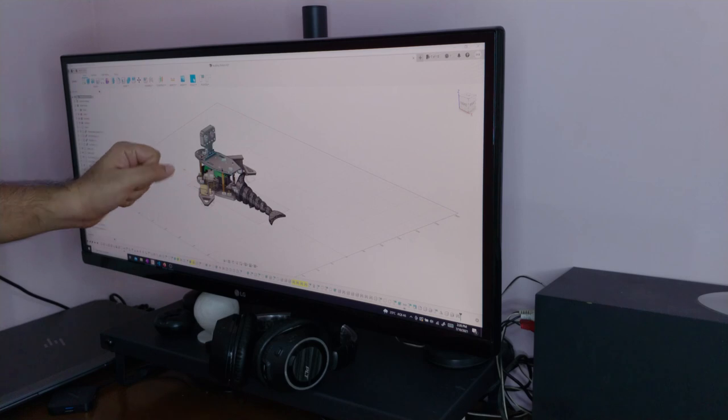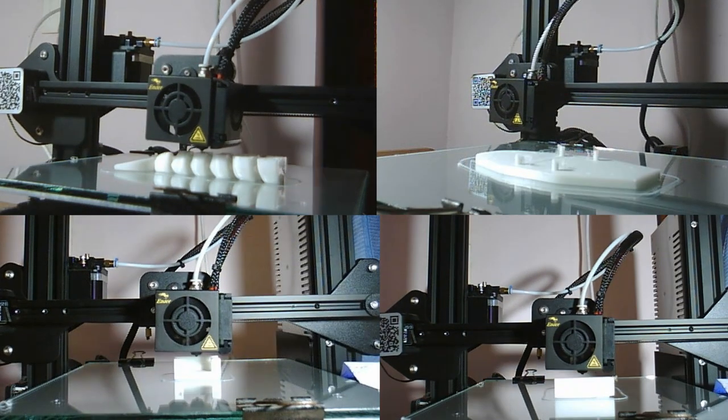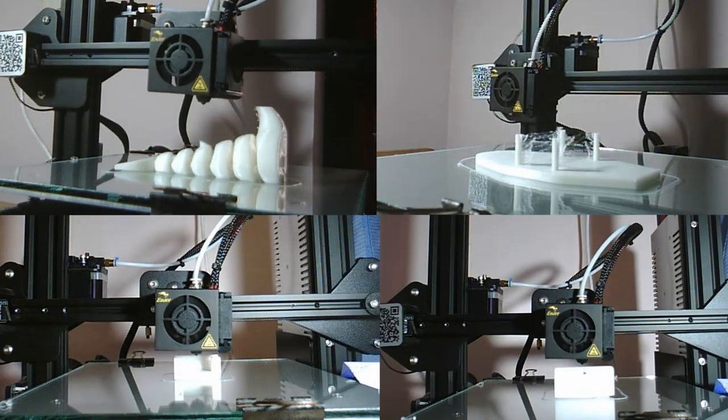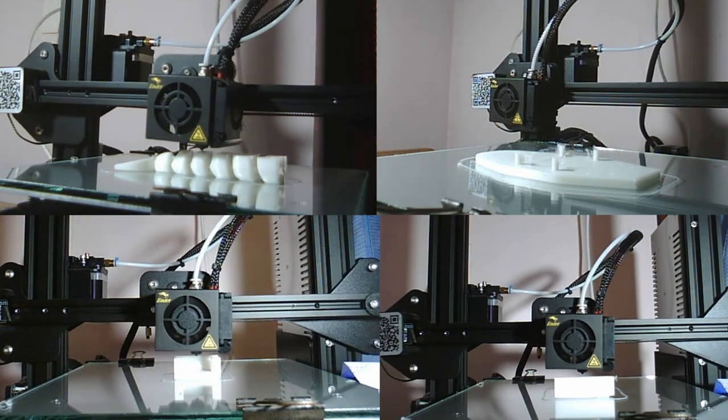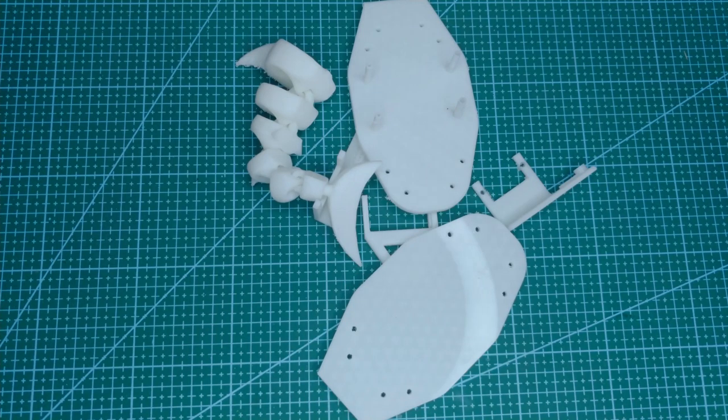Now that the design is complete, let's now print some stuff. That's all the parts we need printed in white PLA on Ender 3 3D printer with a little bit of reverse entropy.